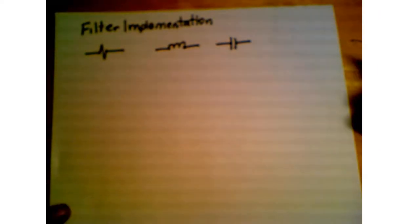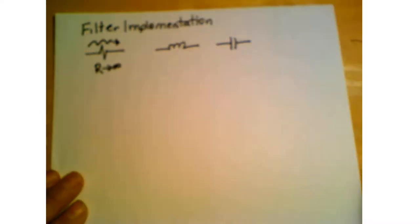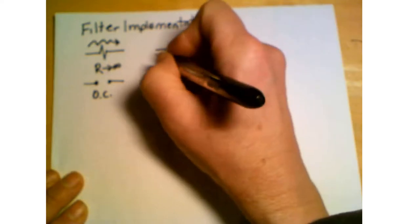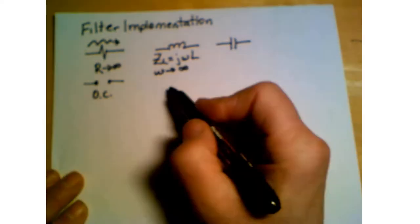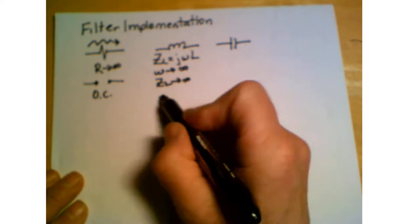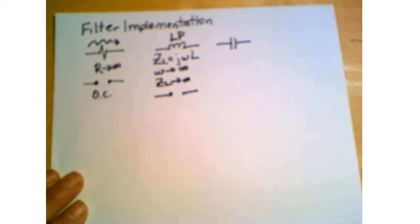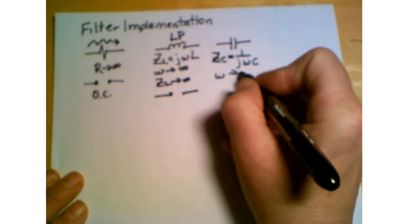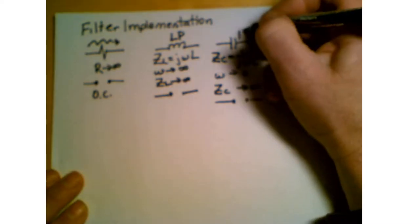Now let's talk about how we implement a filter. Resistors allow every frequency through until the resistance approaches infinity, at which point it's an open circuit and no frequency gets through. An inductor has impedance j·omega·L. As omega gets very large, the impedance approaches infinity, it looks like an open circuit, and high frequencies don't make it through — so an inductor is a low-pass device. A capacitor has impedance 1 over j·omega·C. When omega is very small, the capacitor's impedance approaches infinity and it looks like an open circuit — so a capacitor is a high-pass device.